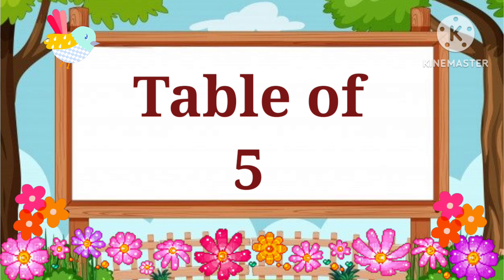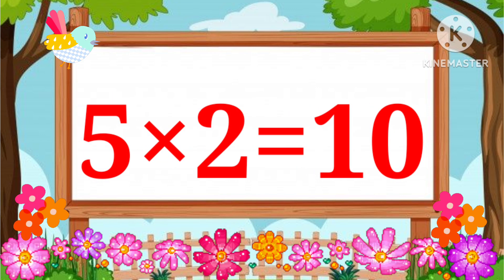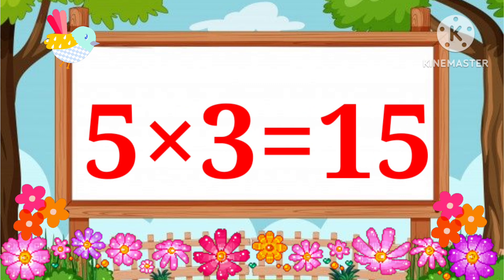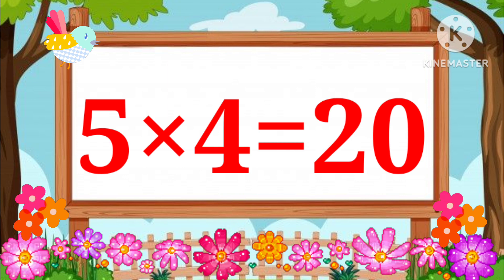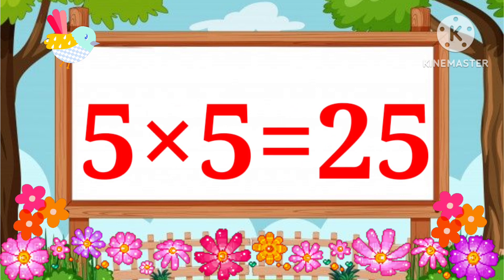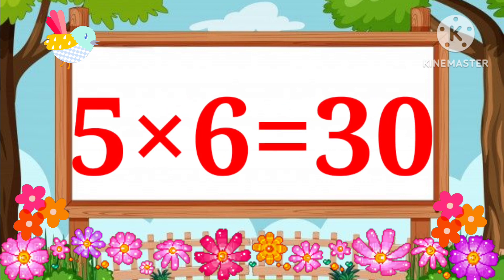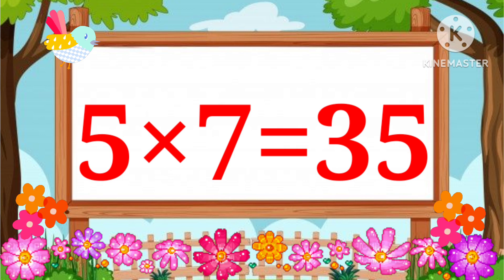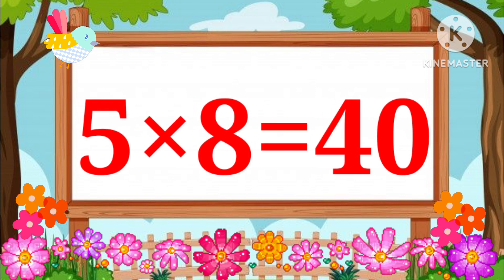Table of 5. 5 one's a 5, 5 two's a 10, 5 three's a 15, 5 four's a 20, 5 five's a 25, 5 six's a 30, 5 seven's a 35.